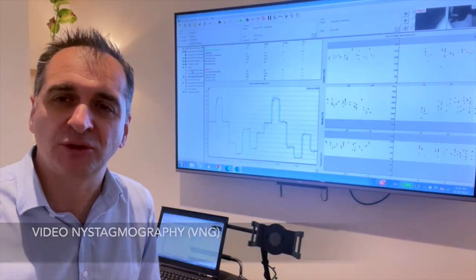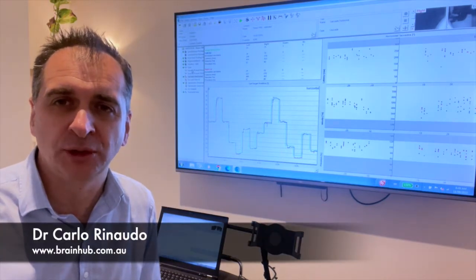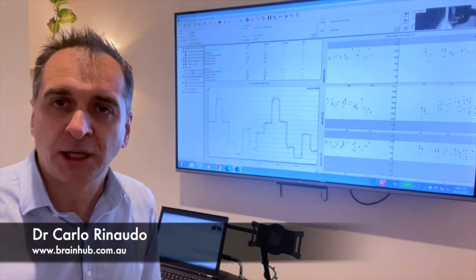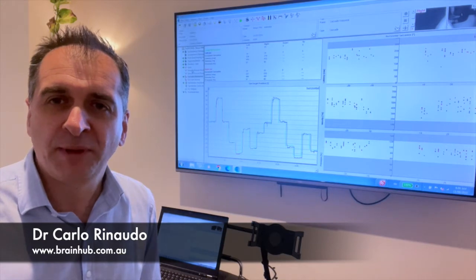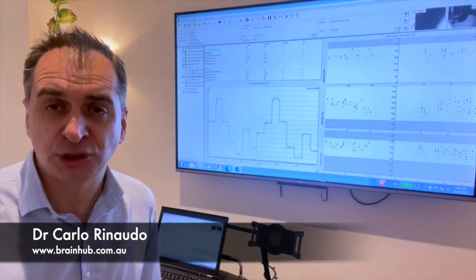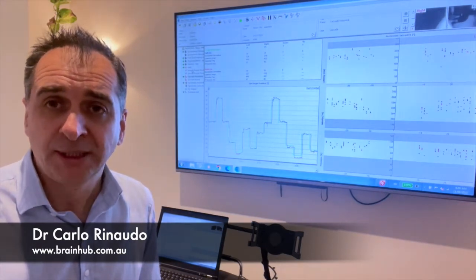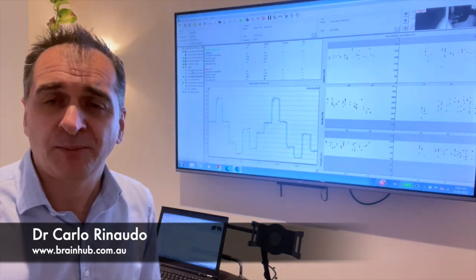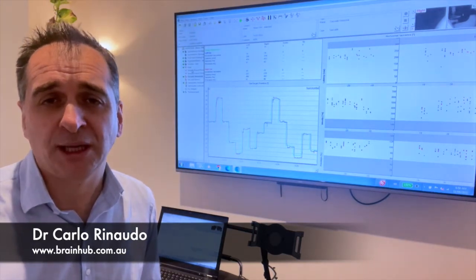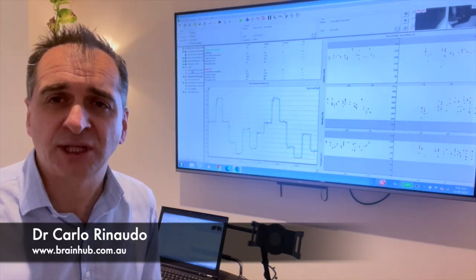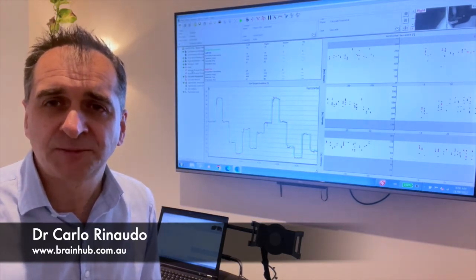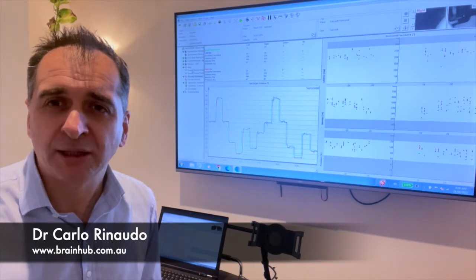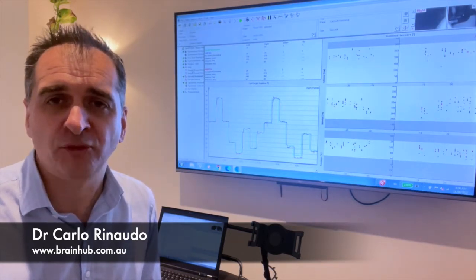VNG is one of the tools that we use here at Brain Hub that allows us to accurately measure eye movements. And there are many conditions, including children with learning and behavioral issues, adults with Parkinson's and dementia, people with brain injury, concussions, and many other conditions that have very consistent abnormalities or impairments with eye movements.